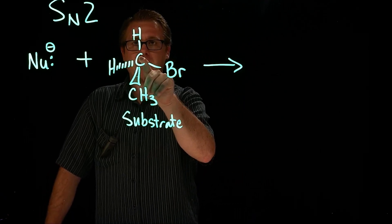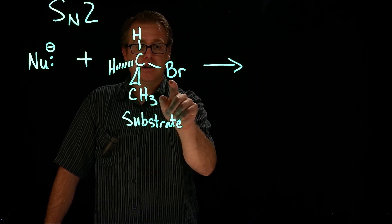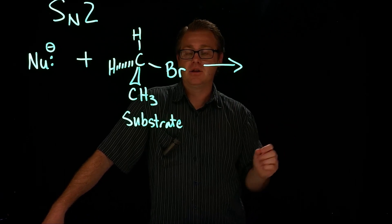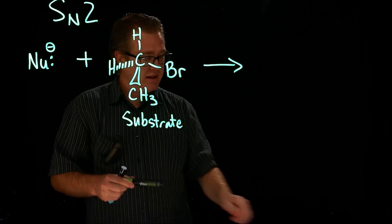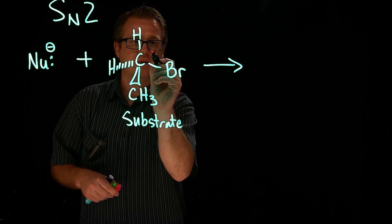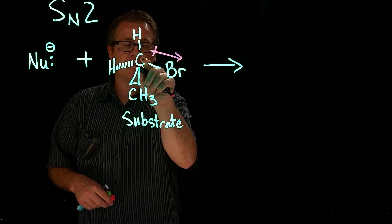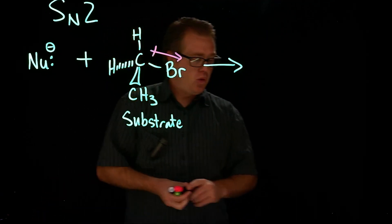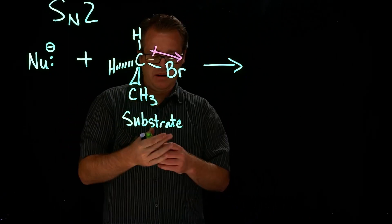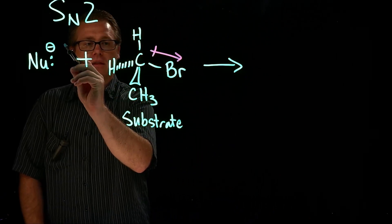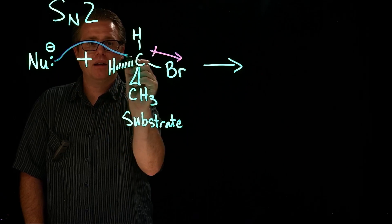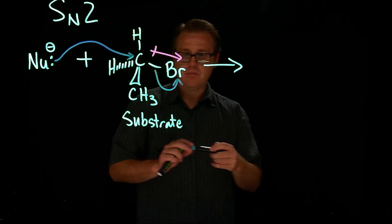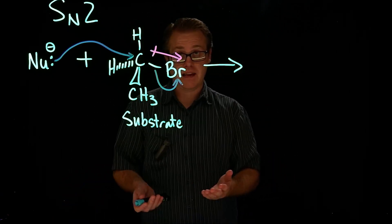Why is this carbon electrophilic? It's because this halogen right here is electronegative and it's going to pull electron density towards itself. As it pulls electron density towards itself, that carbon right there is going to get a partial positive. So we have an electrophilic carbon in which our nucleophile is going to take the lone pairs, come in and attack that carbon, forming a bond with it and kicking off the leaving group — in this case, the bromine.